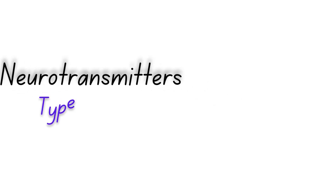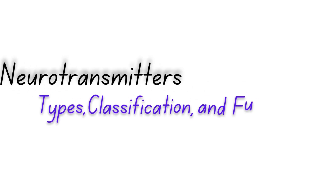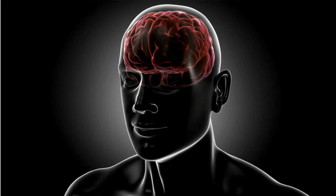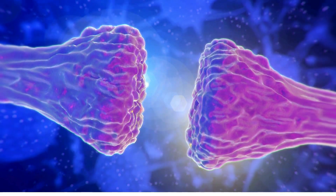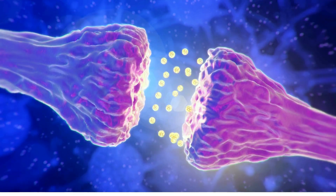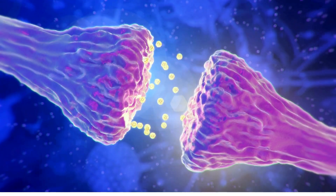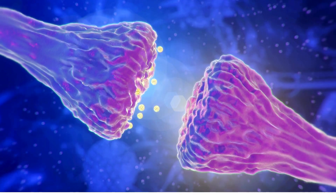In today's video we'll explore neurotransmitters, their types, classifications, and functions. I'll be breaking them down for easier understanding and providing helpful mnemonics and analogies. Neurotransmitters are chemicals that allow neurons — your brain cells — to communicate with each other. Think of them as email messages sent between neurons, carrying instructions about everything from mood to movement.